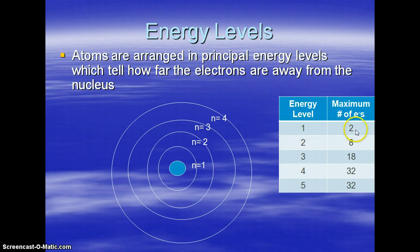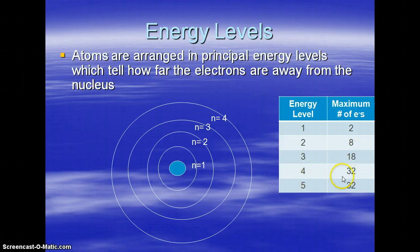The first energy level can only hold two electrons. The second can hold eight. The third can hold eighteen. The fourth, thirty-two. Then the fifth — at this point, we just know of thirty-two.